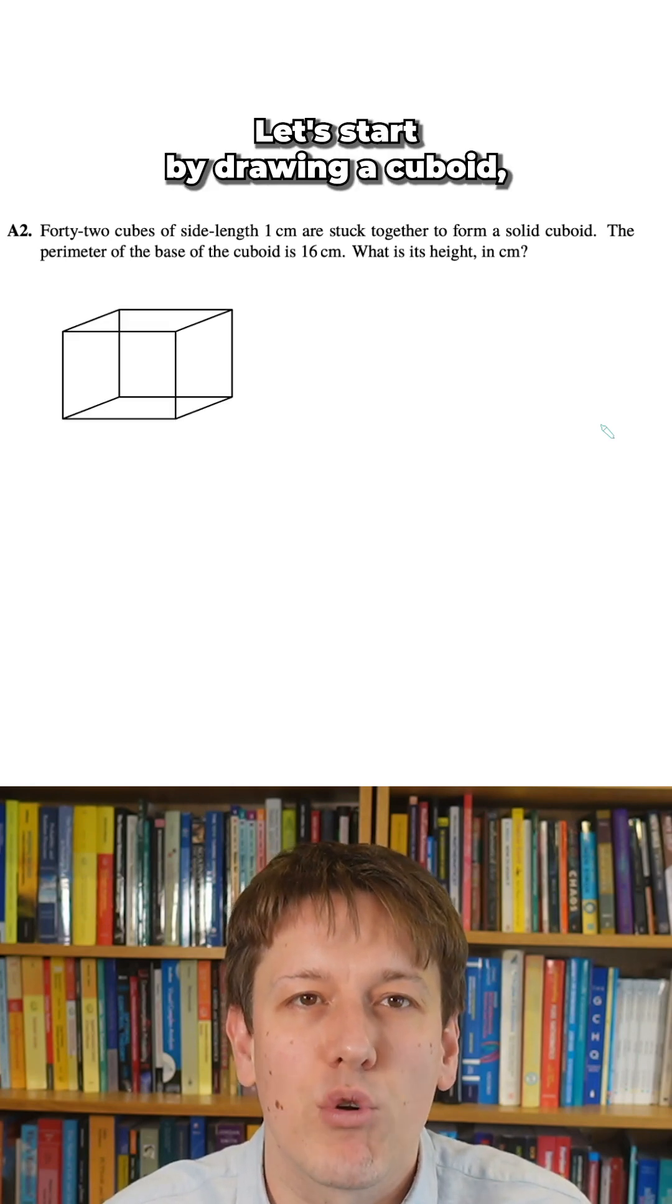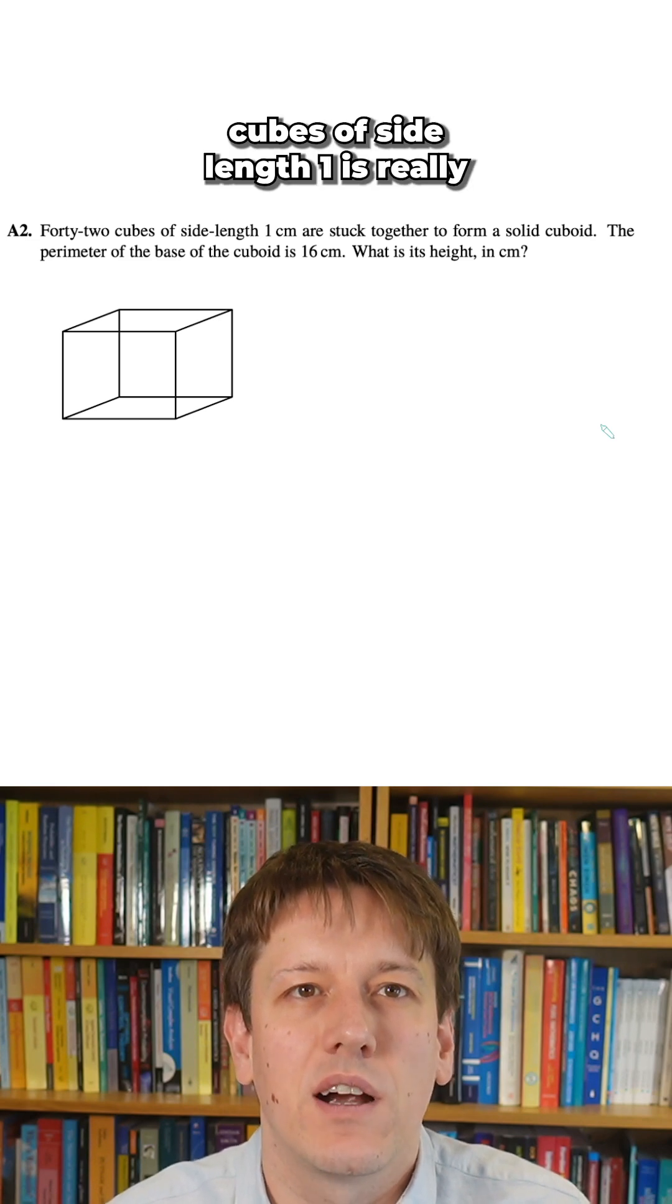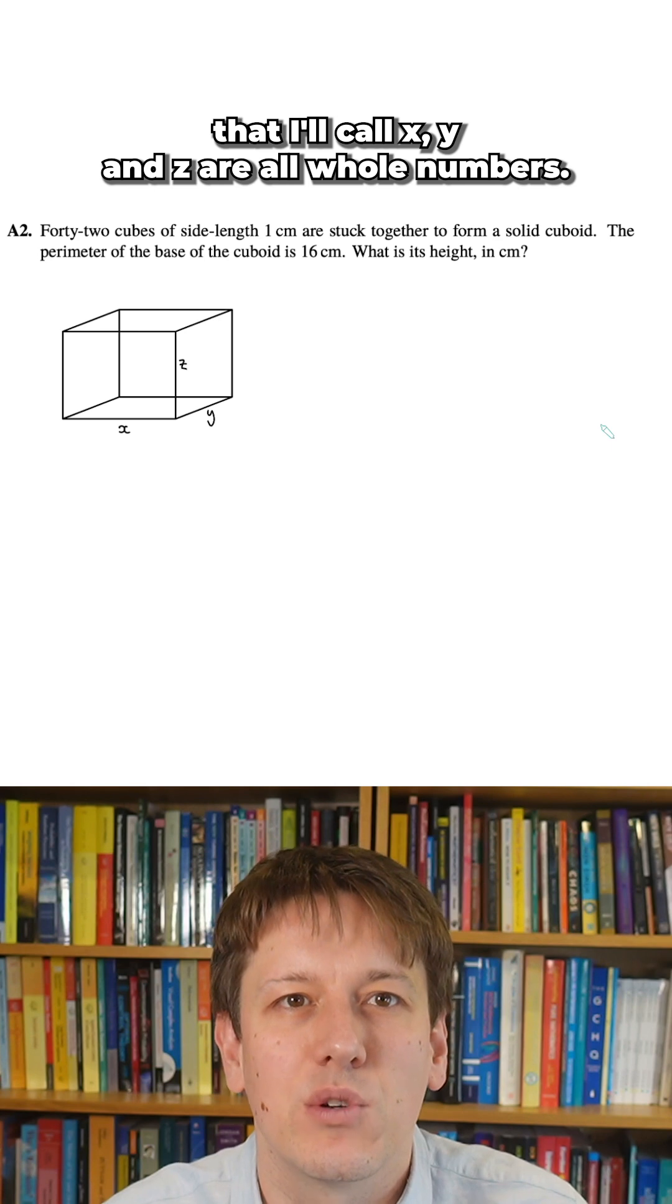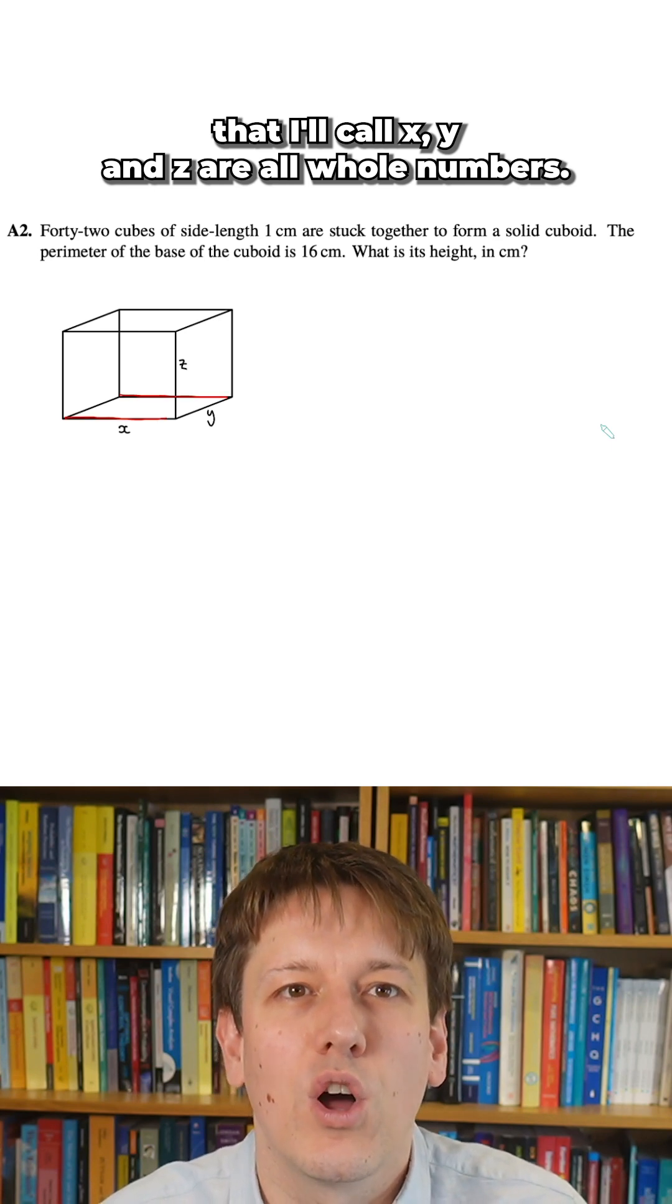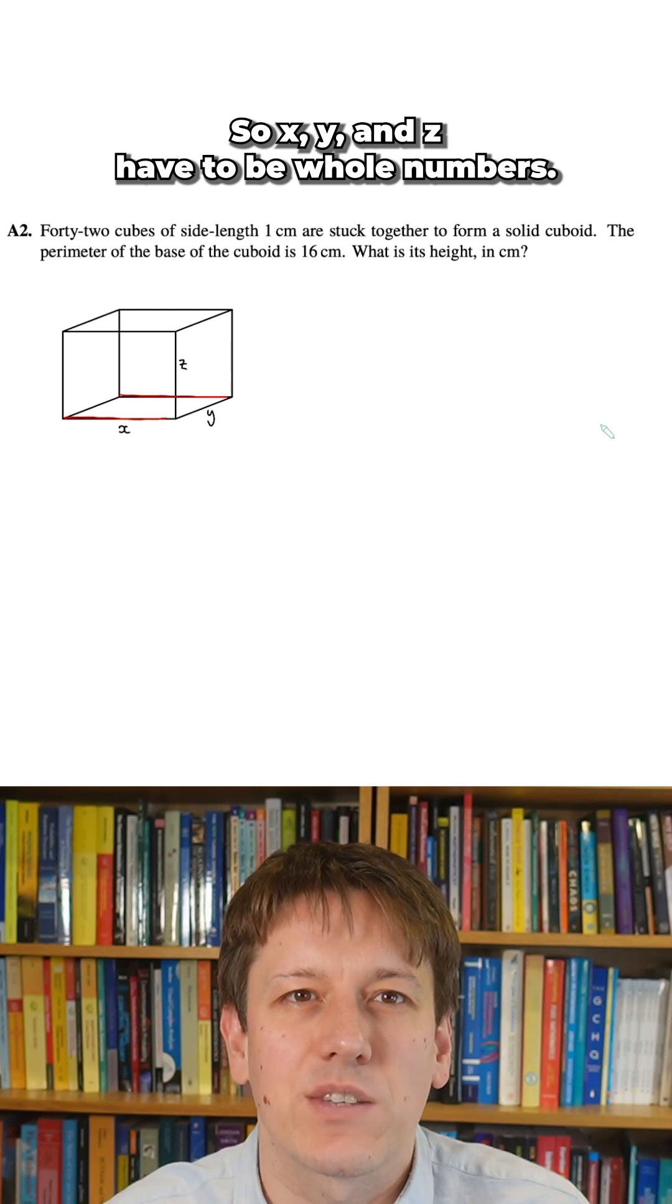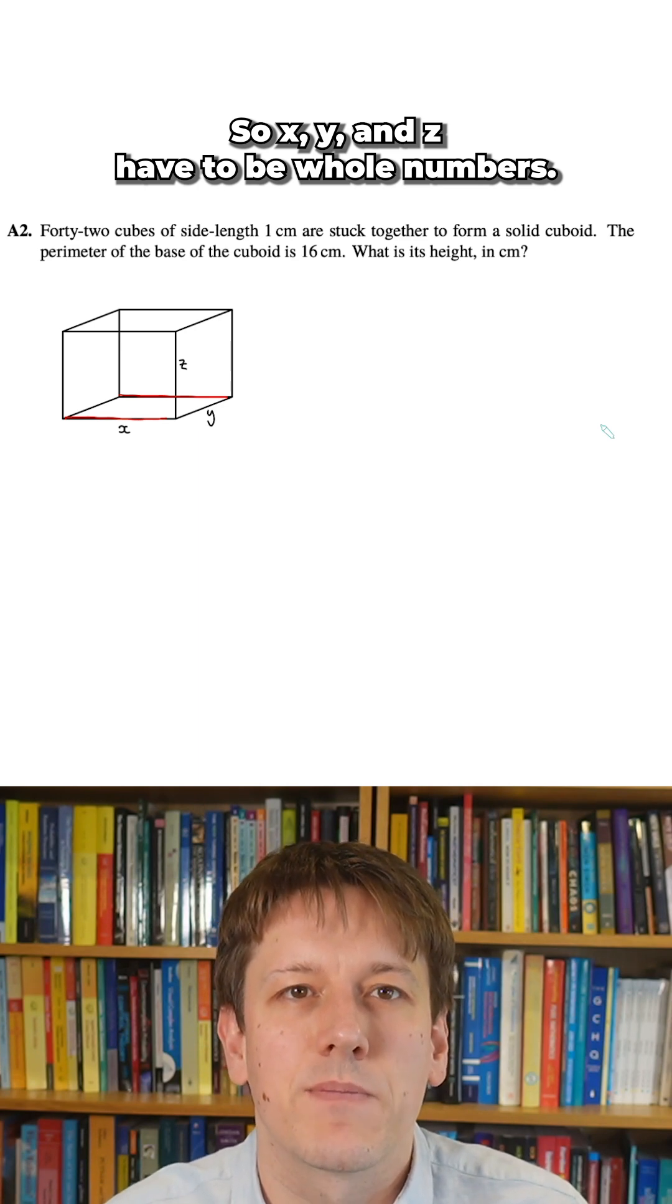Let's start by drawing a cuboid. And the fact that it's going to be made out of cubes of side length 1 is really just a way of telling us that the side lengths here, that I'll call x, y, and z, are all whole numbers. They have to be made out of a whole number of 1x1 cubes, so x, y, and z have to be whole numbers.